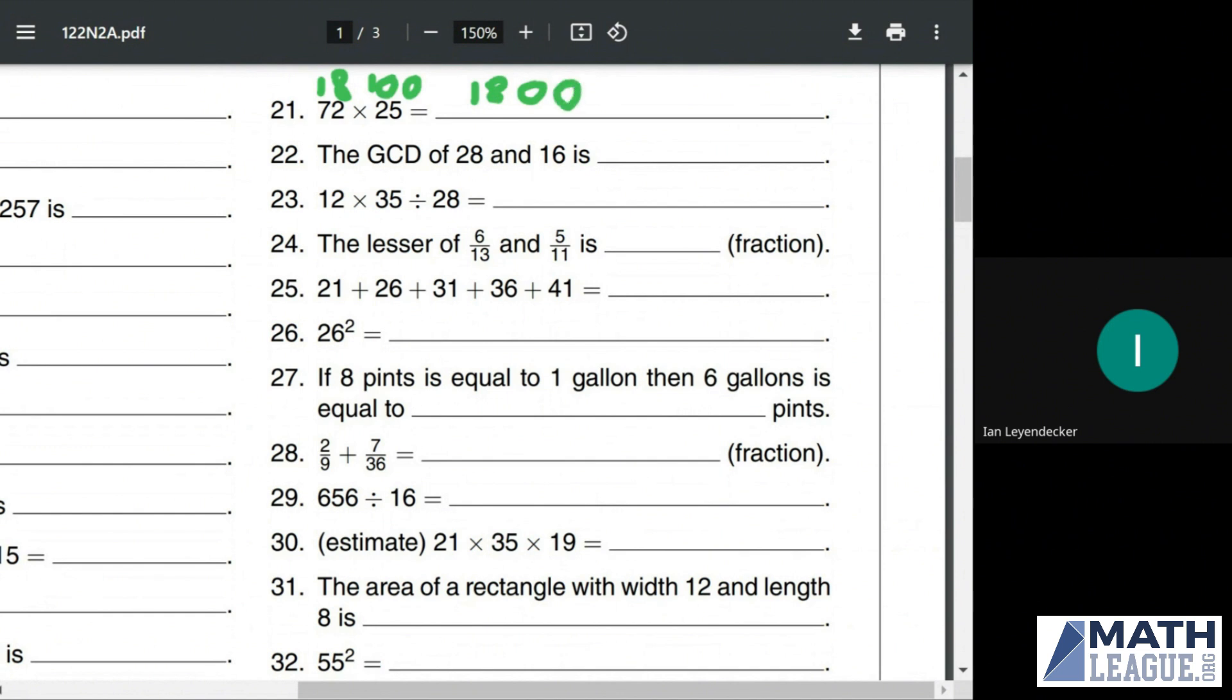The greatest common denominator of 28 and 16 is? Well, we can see that 16 is just a power of 2, and the highest power of 2 that goes into 28 is 4 because it's 4 times 7. So the greatest common denominator is going to be 4.